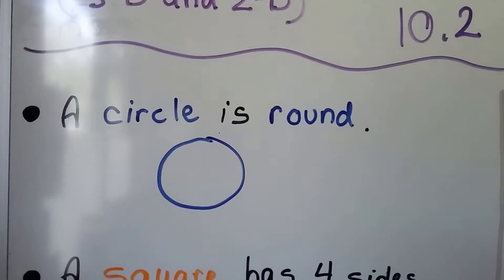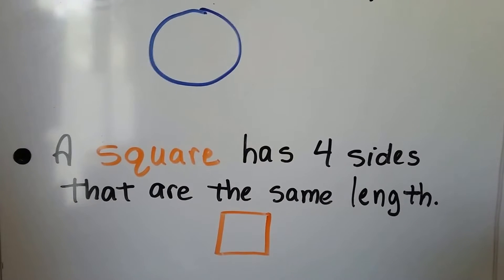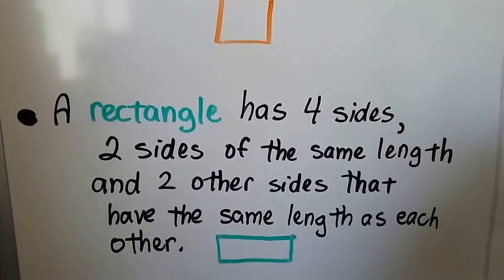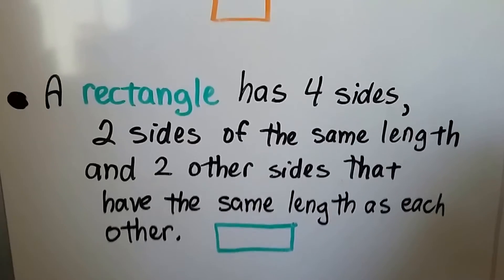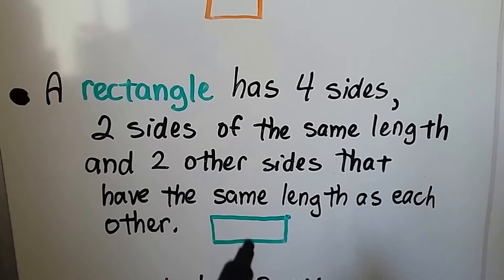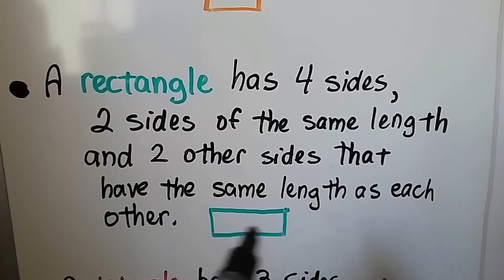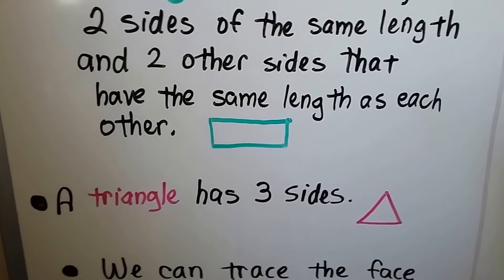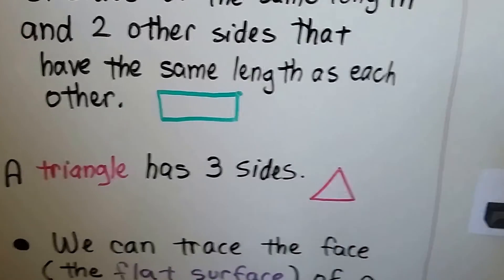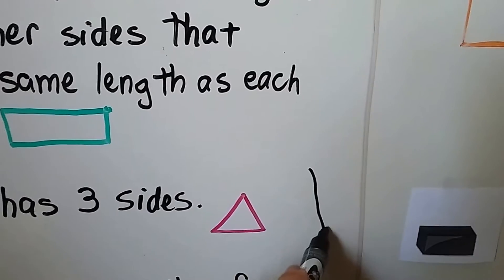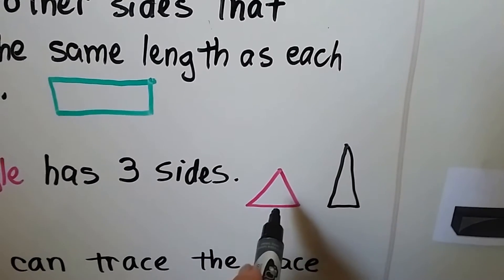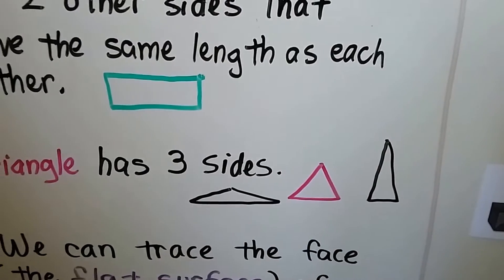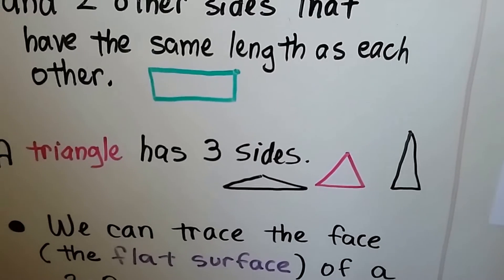We know a circle is round. We know a square has four sides and all the sides are the same length — that's what makes it a square. A rectangle has four sides: two of the sides have the same length, like the top and the bottom, and the two other sides have the same length as each other. A triangle has three sides and the sides could be any length. We could have a triangle that's really tall and skinny, one where all the sides are the same length, or one that's really long and wide on the bottom but not very tall. Those are all triangles — they all have three sides.